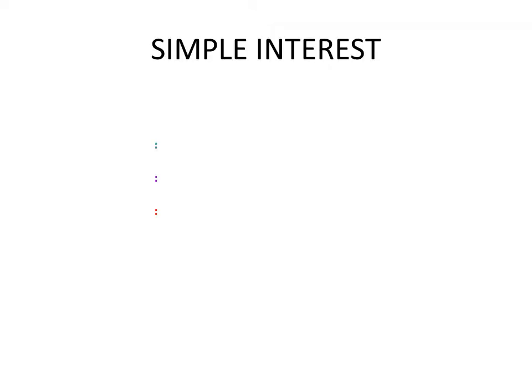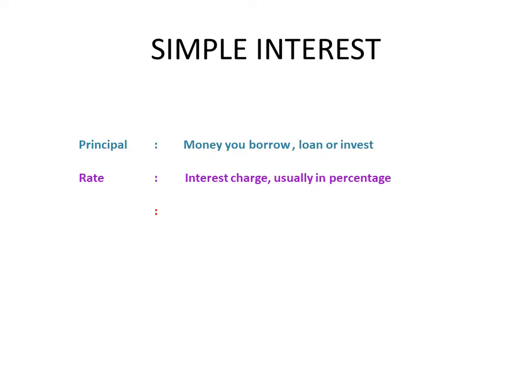When calculating simple interest, there are three main items to focus on. The first is the principal — the money you borrow, or if you're investing, the money you invest. The next factor is the rate, which is the interest that is charged. The final thing to consider is the time — the length of time you're borrowing or investing, and it's usually in years.